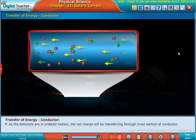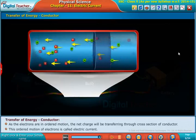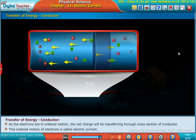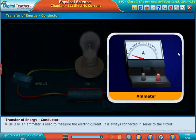As the electrons are in ordered motion, the net charge will be transferring through the cross-section of the conductor. This ordered motion of electrons is called electric current. Usually, an ammeter is used to measure the electric current. It is always connected in series to the circuit.